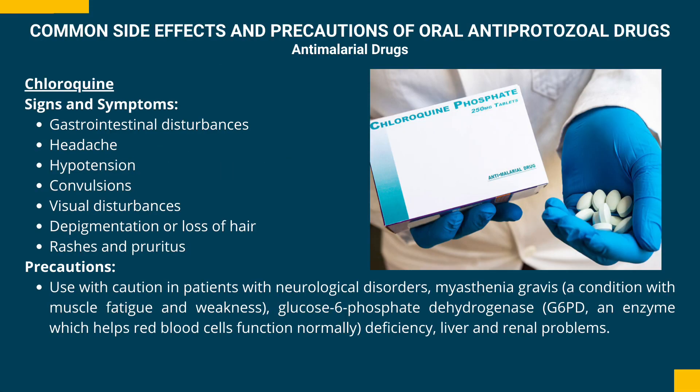Precautions: used with caution in patients with neurological disorders. Myasthenia gravis is a condition with muscle fatigue and weakness. Glucose-6-phosphate dehydrogenase (G6PD) deficiency is an enzyme deficiency which affects how red blood cells function normally.